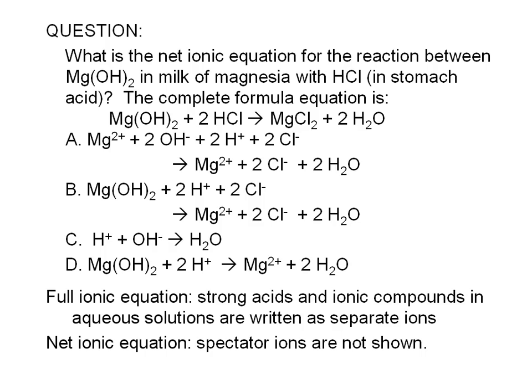If, upon writing the full ionic equation, we find that nothing actually happened to some of the ions, we call them spectator ions. We take them out of the equation and we get what's called the net ionic equation.